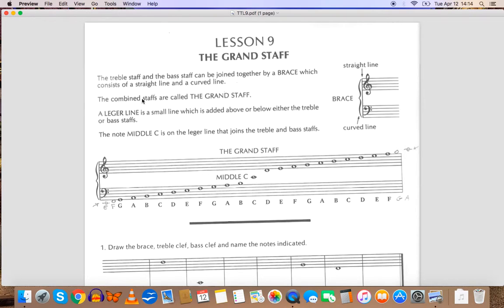Together they're called the grand staff. One thing you need to know is a ledger line is a small line which is added above or below either the treble or the bass staffs. As you can see here, all the notes, not counting sharps or flats on the grand staff, you can see they're connected in the middle by the middle C.